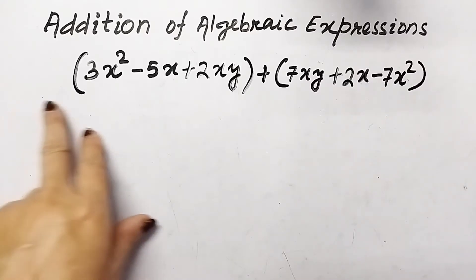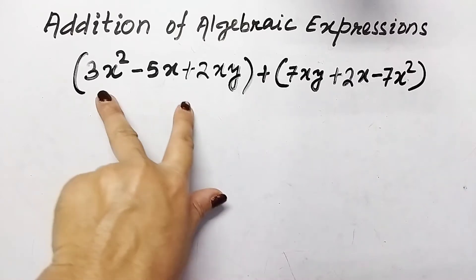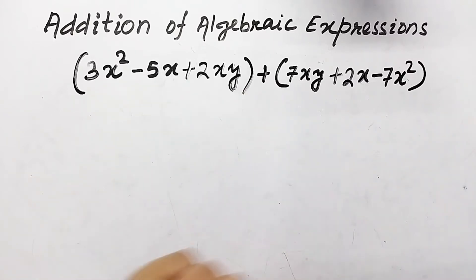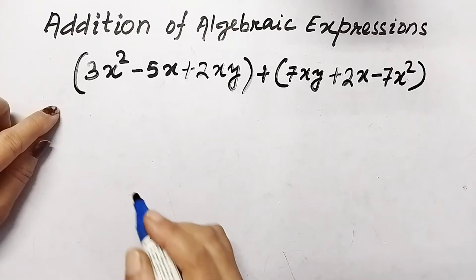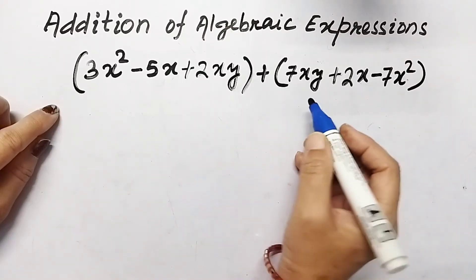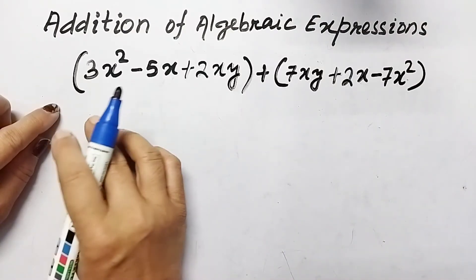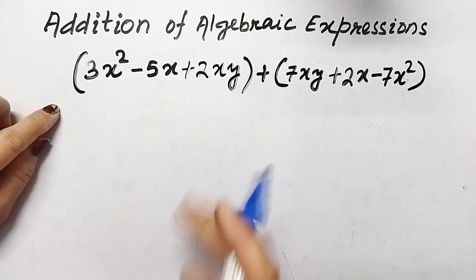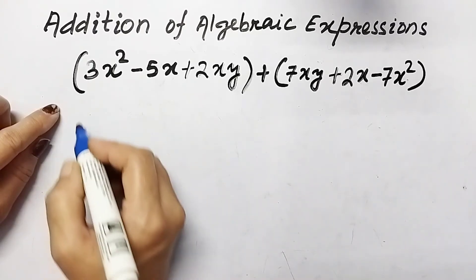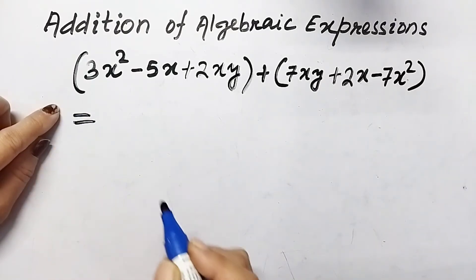Now let us take one example of adding two algebraic expressions. There are two methods to add: the first is the horizontal method, and the other is the column method. Let us first add by the horizontal method.